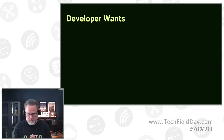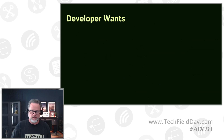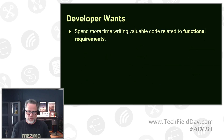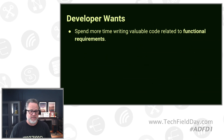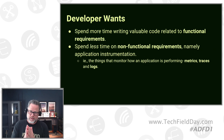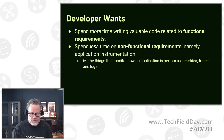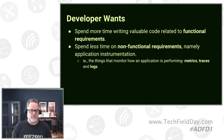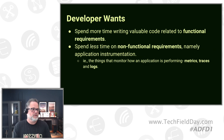Let's focus on the developer wants. Obviously this is a pretty broad spectrum, but in the context of this discussion, developers want to spend more time writing valuable code related to their functional requirements. Conversely, they want to spend less time working on non-functional requirements — things like instrumenting their applications. All this telemetry data we keep talking about — these metrics, traces, and logs — takes developer effort to instrument their code to output meaningful information that can then be used by observability systems.